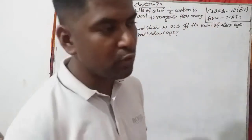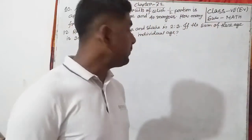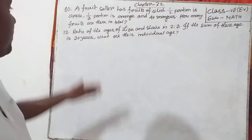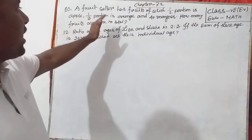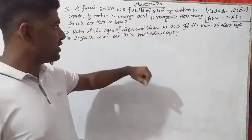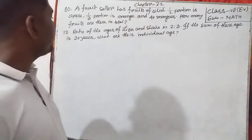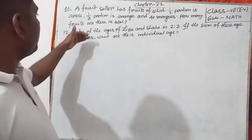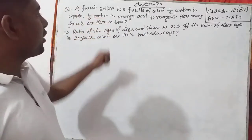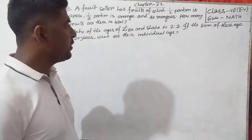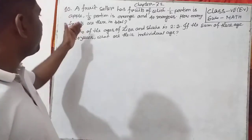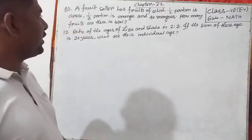I will write down question number 10 and 12. Question number 10 is: a fruit seller has fruits of which half portion is apple, one-third portion is orange, and 40 mangoes. How many fruits are there in total?